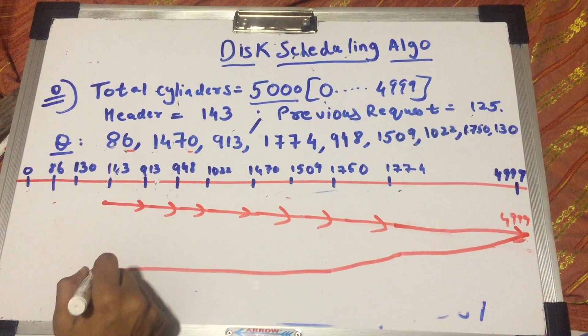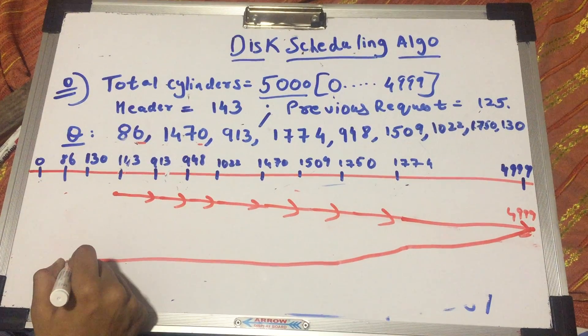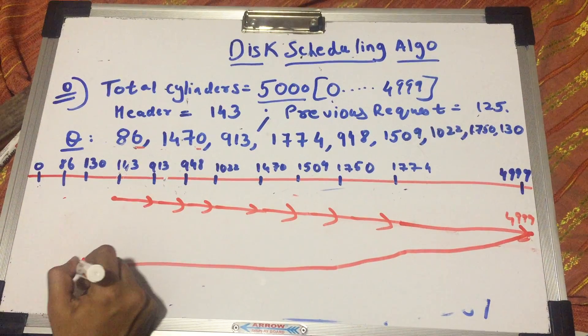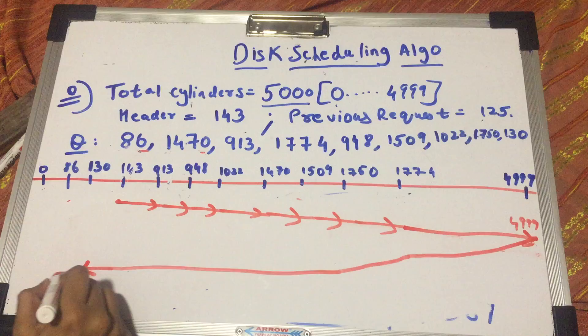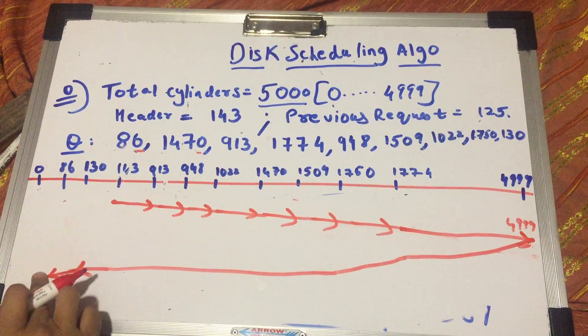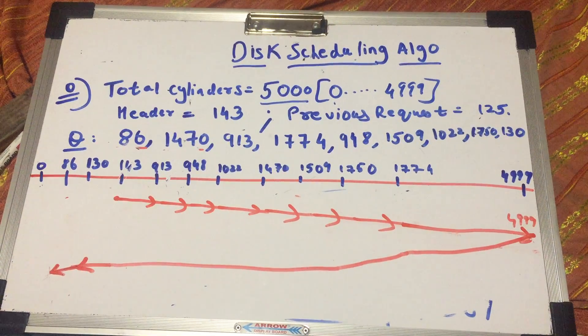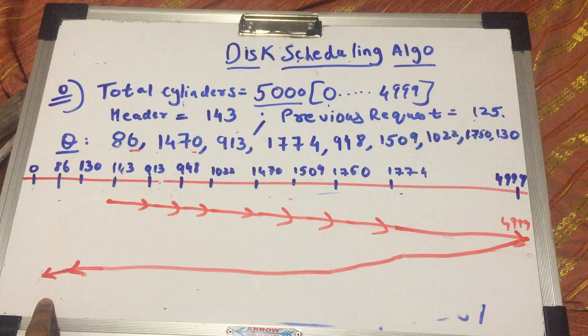So 130, I check. 130 is not seeked. So I seek 130 and then I seek 86. And this is where my disk arm stops moving.